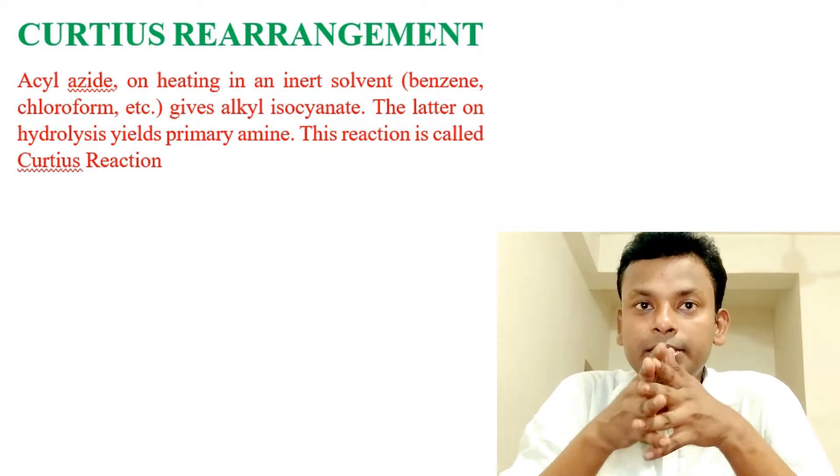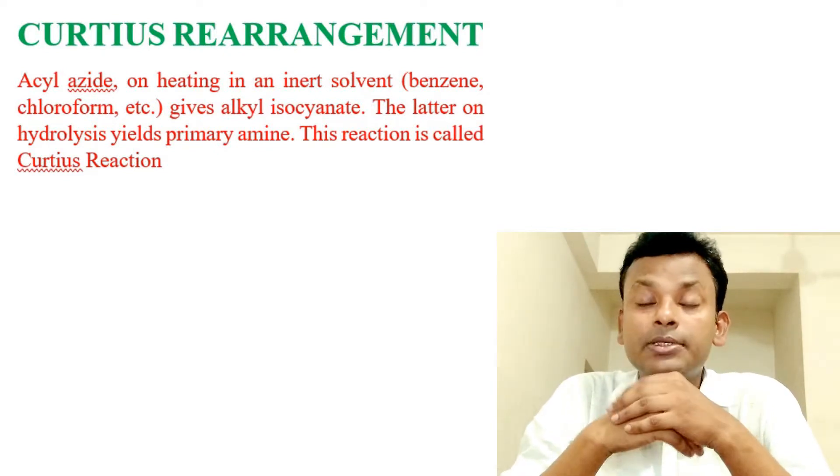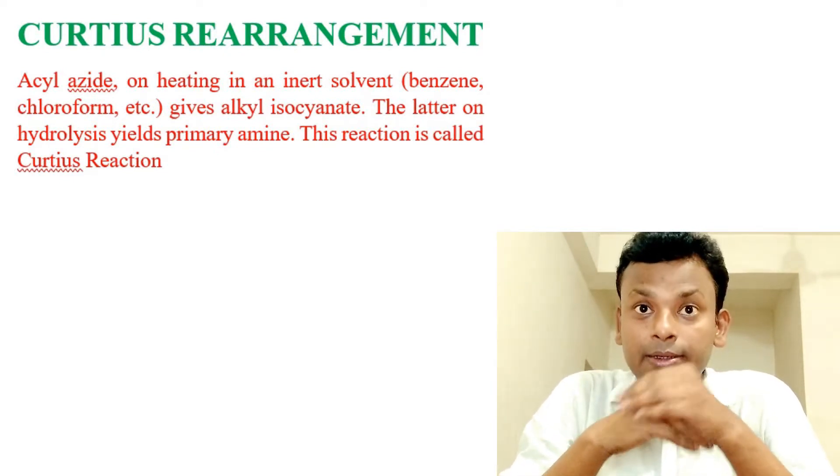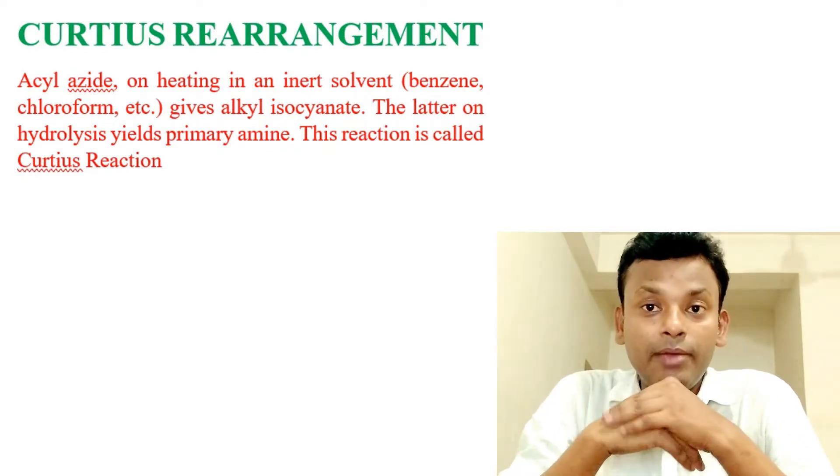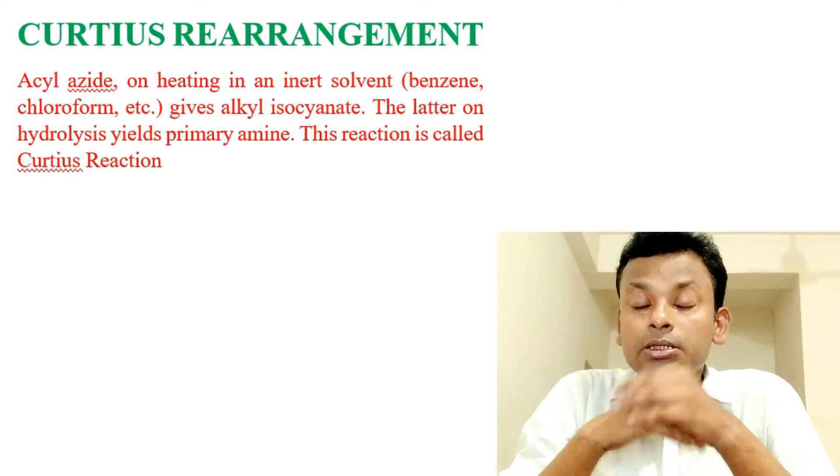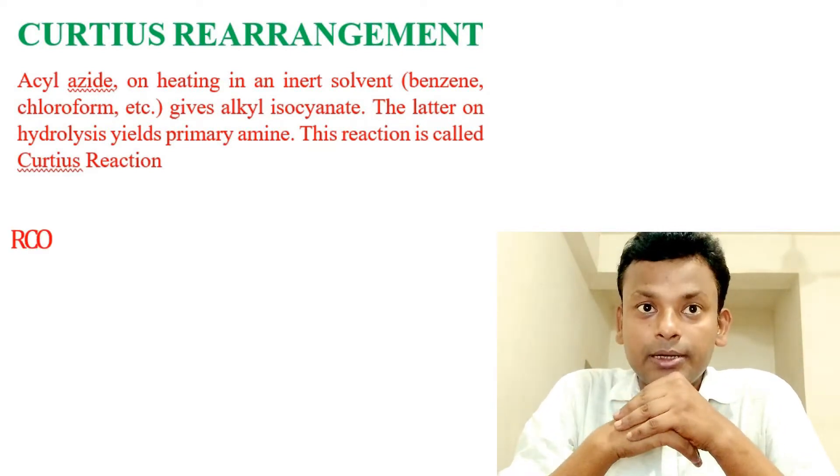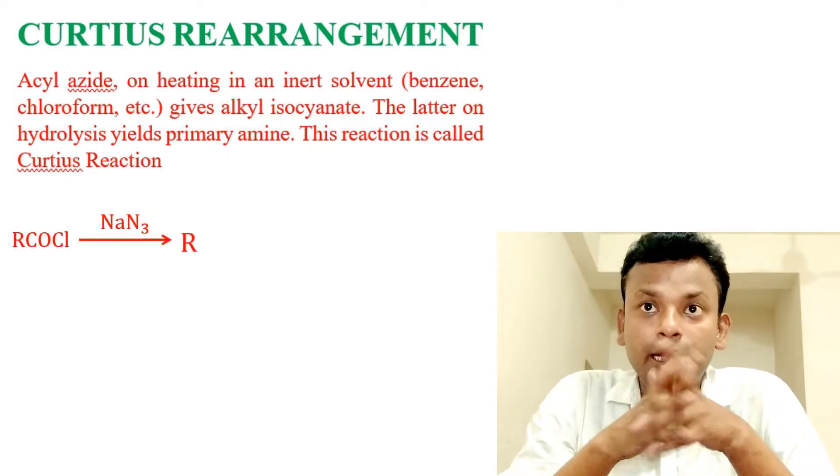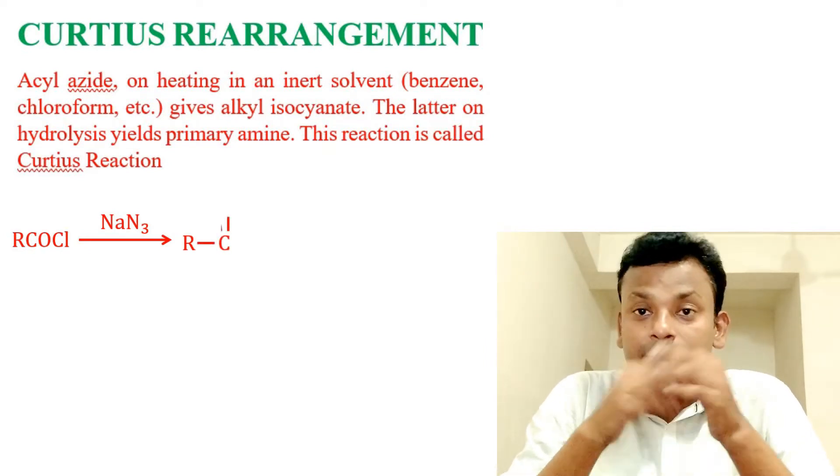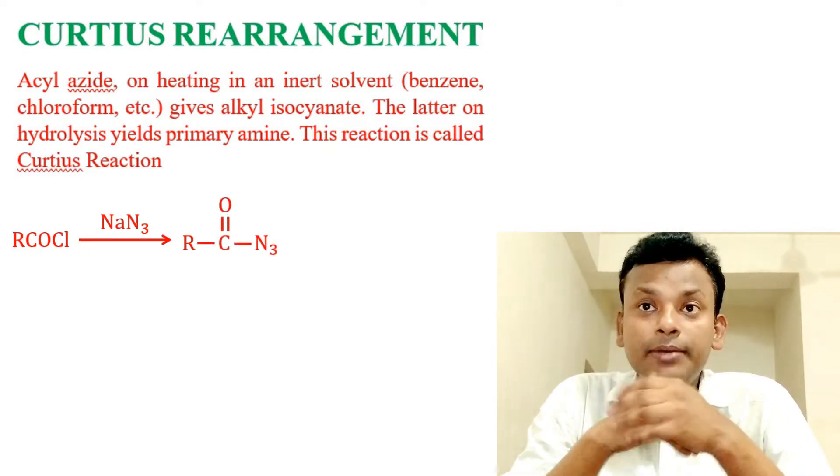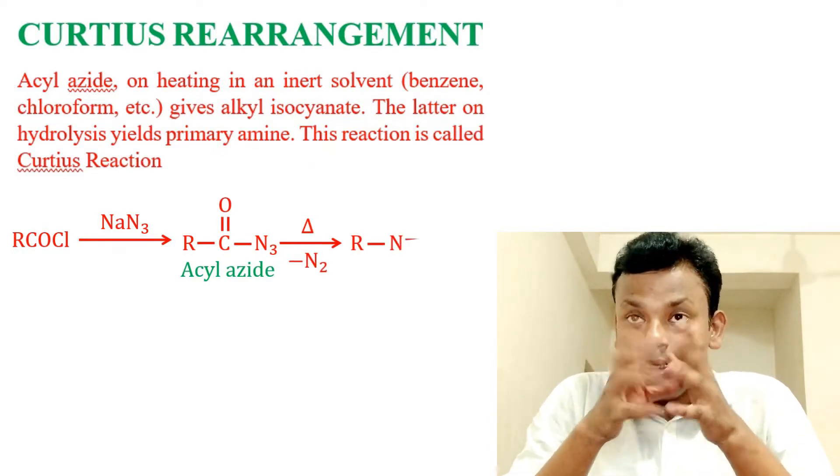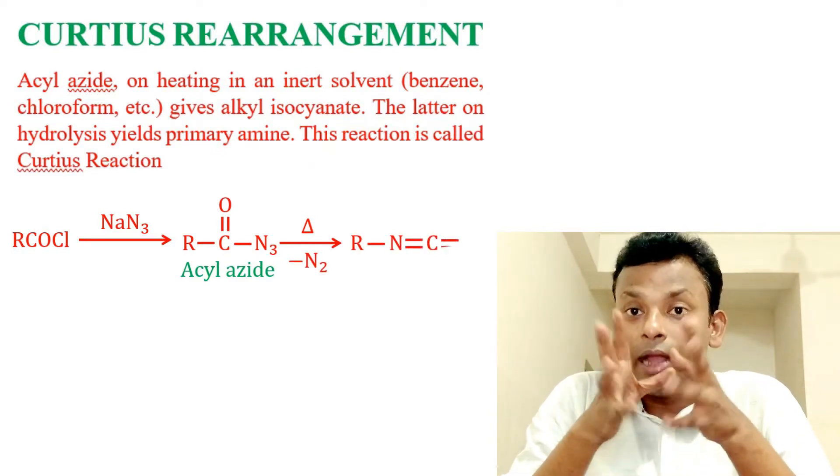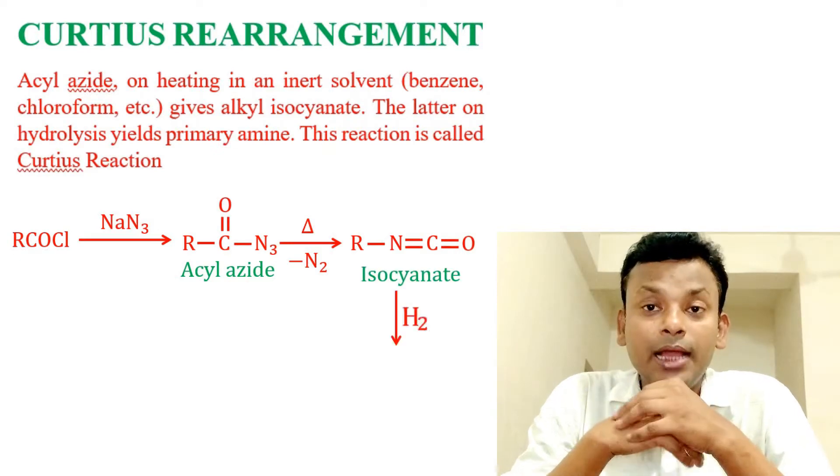The latter on hydrolysis yields primary amines. This reaction is called Curtius reaction. RCOCl plus sodium azide (NaN3) gives RCO-N3, that is acyl azide. Heat with loss of nitrogen gives R-N=C=O isocyanate, and hydrolysis gives primary amine.